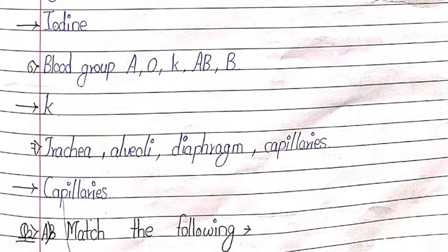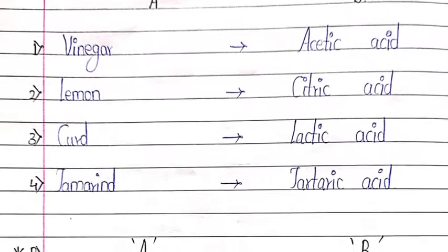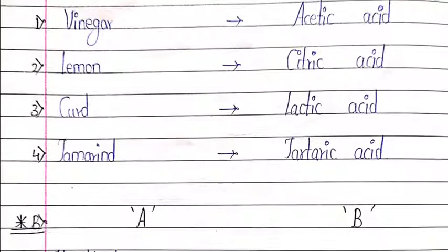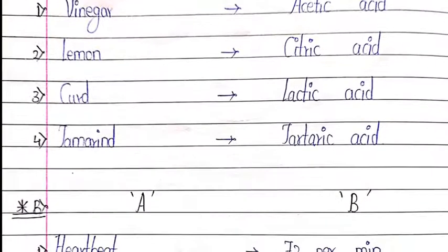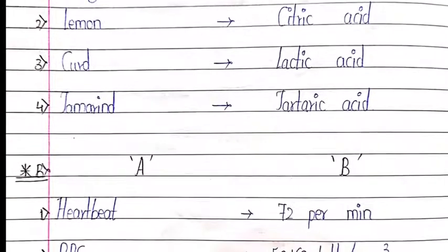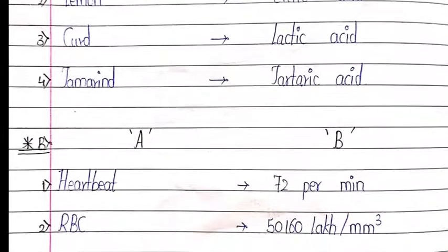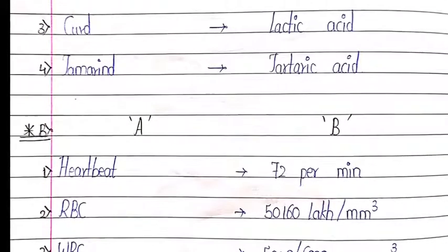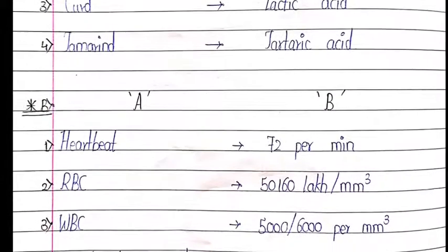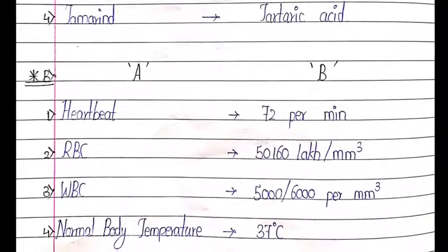Question number 2: Match the following. First: vinegar — acetic acid; lemon — citric acid; curd — lactic acid; tamarind — tartaric acid. Second set: heartbeat — 72 per minute; RBC — 50 to 60 lakh per mm cube; WBC — 5000 to 6000 per mm cube; normal body temperature — 37 degree C.